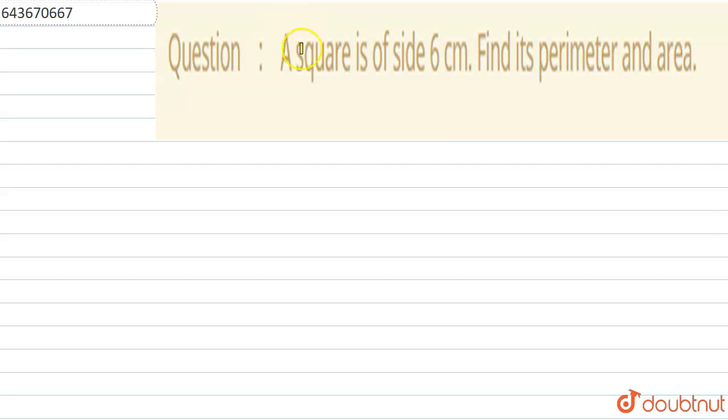Hello friends, so the question asked here is a square is of side 6 centimeter. So find its perimeter and area.